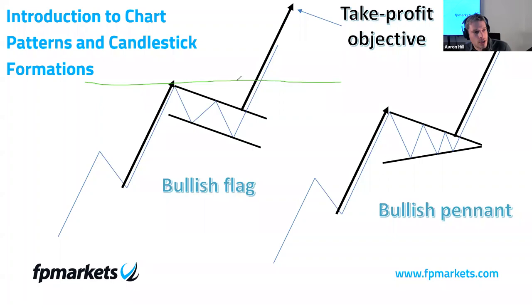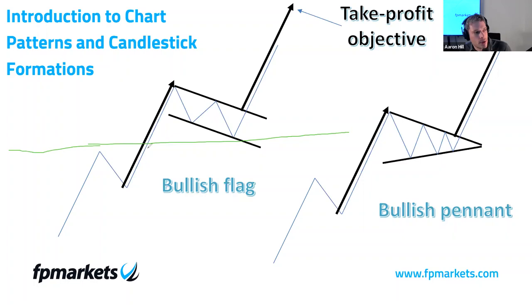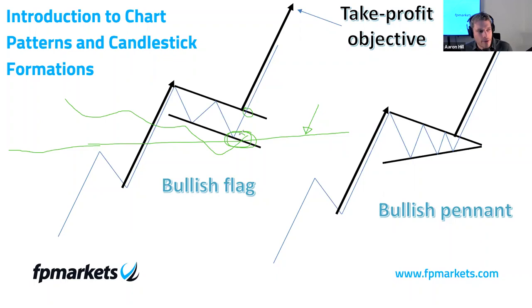You can also look at things like if we've broken a resistance and as price pulls back, we're forming a retest of that resistance turned support — then we break out to the upside of the bullish flag. We've then got confirmation from a chart pattern as well as technical structure. You can also use moving averages, which can offer dynamic support and resistance. If the 200 or 50-day SMA converges with this area, that's fantastic. And if you have all of this together plus Fibonacci clusters at this point, you have a very confluent trade with a high probability of price reaching the take profit objective.